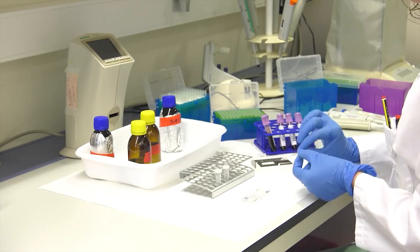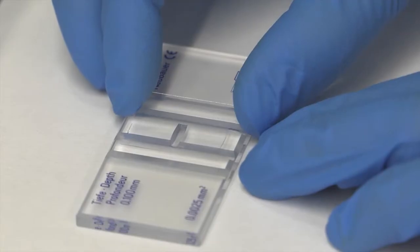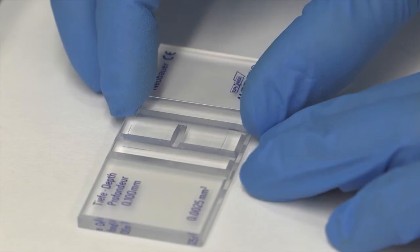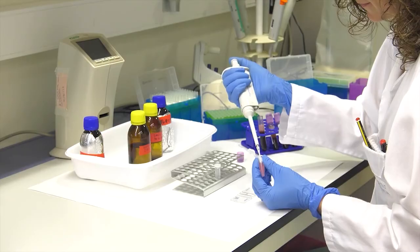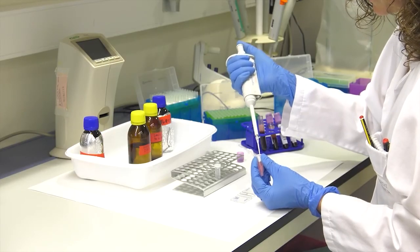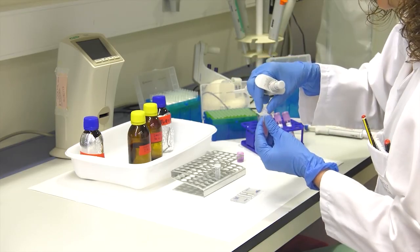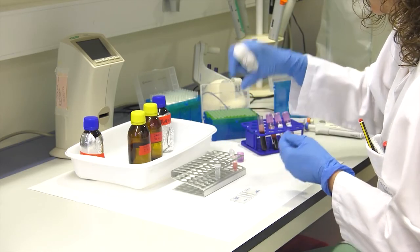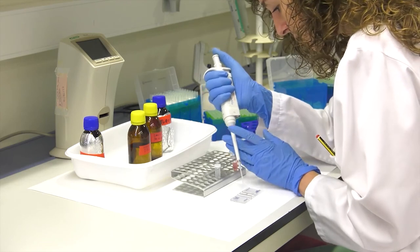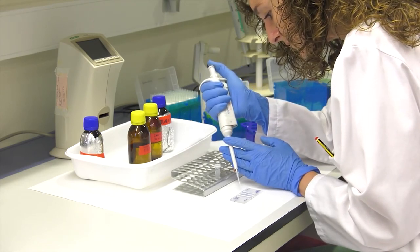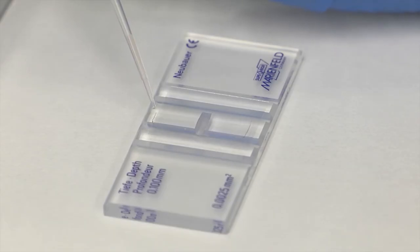After dilution, and with the chamber clean, place a coverslip on the surface of the chamber. With a pipette, take 10 microliters of the diluted blood sample and deposit it little by little in the central area of the chamber, placing the tip of the pipette on the upper or lower side of the coverslip, and introducing the sample gently to prevent it from overflowing or producing bubbles.